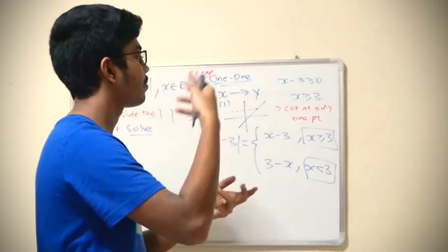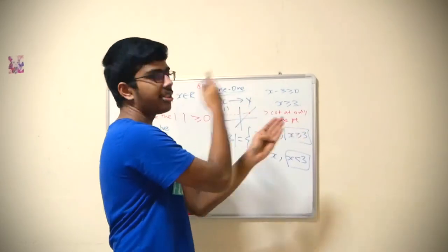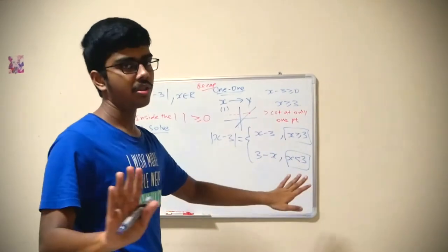Either the question gives you the domain, which is either this one or this one, or they ask you to find it yourself, or they give you the freedom of choice to choose which part—the left part or the right part—for your question.